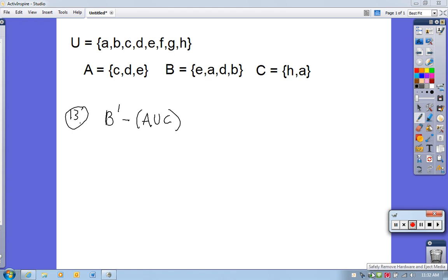This is Math 107, practice test one, problem number 13. We have this space defined up here. We're supposed to find the complement of B, the difference between the complement of B and A union C. So I'm going to do a little preliminary work here.